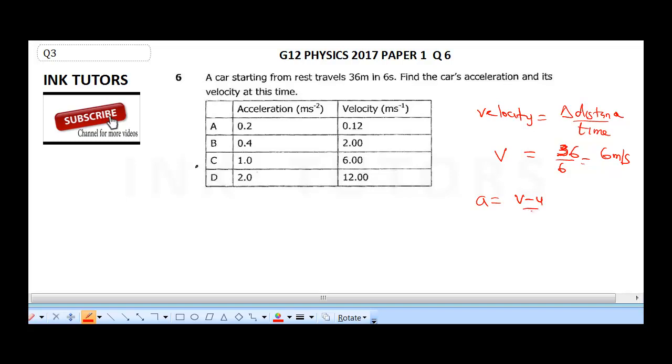Now to get our acceleration, acceleration is equal to change in velocity over time. Since the car is starting from rest, whenever something is starting from rest, our initial velocity is always zero. So this is going to be 6 minus zero divided by 6. So our acceleration is going to give us 1 meter per second squared. The correct option here is C: 1 meter per second squared and 6 meters per second.